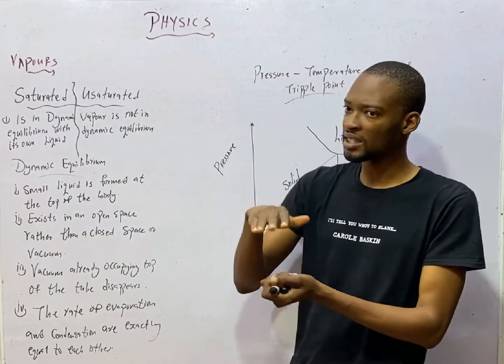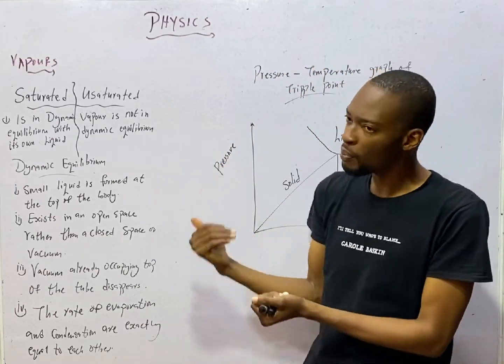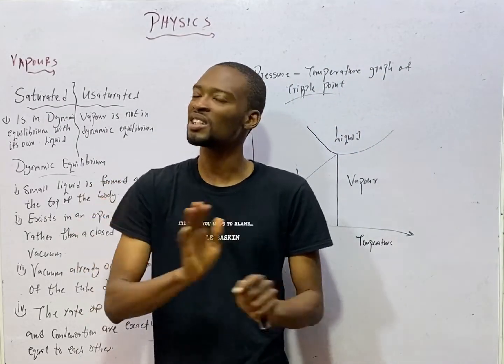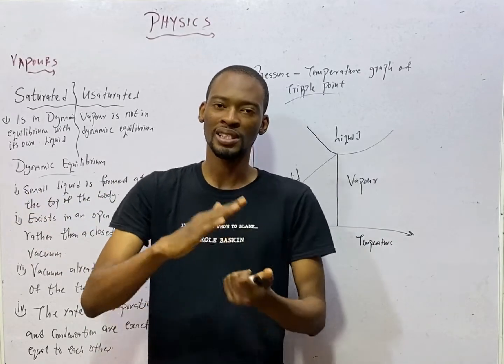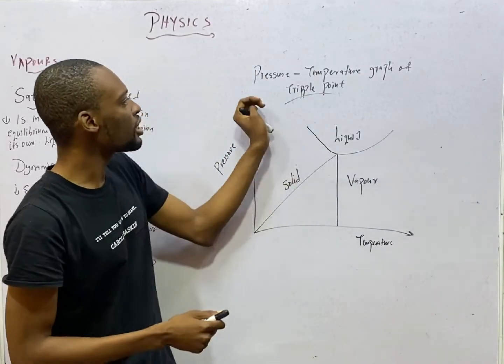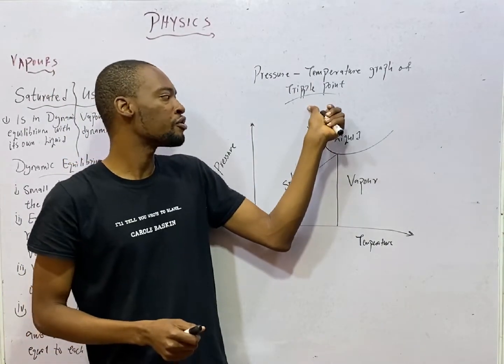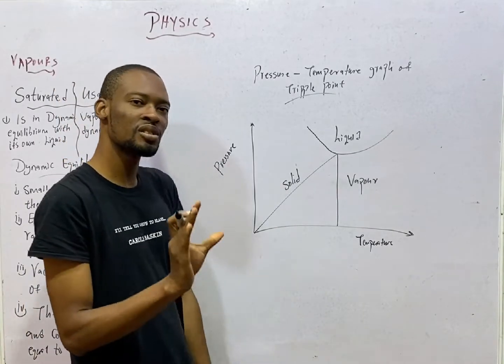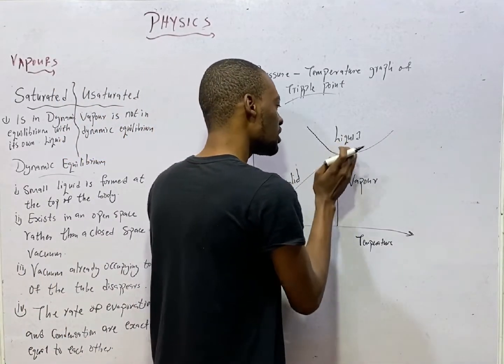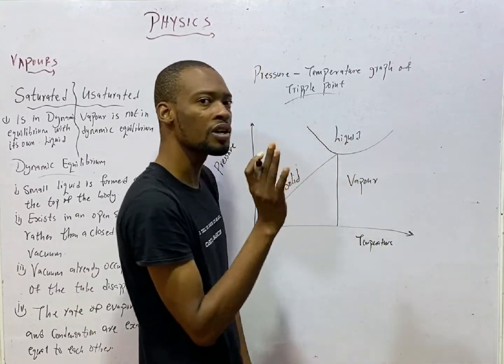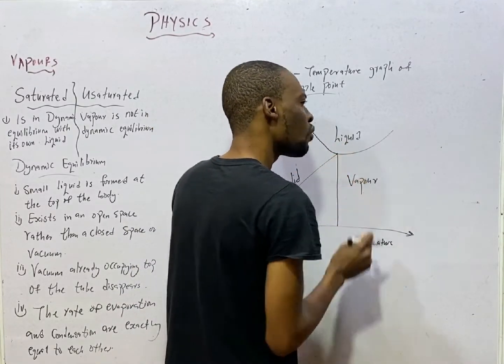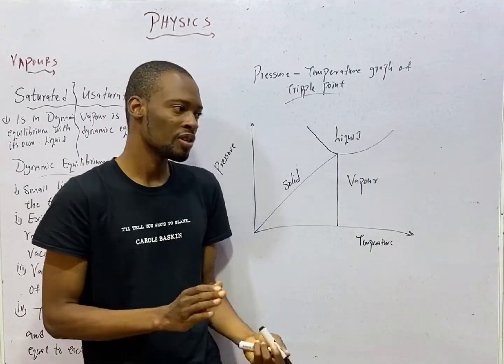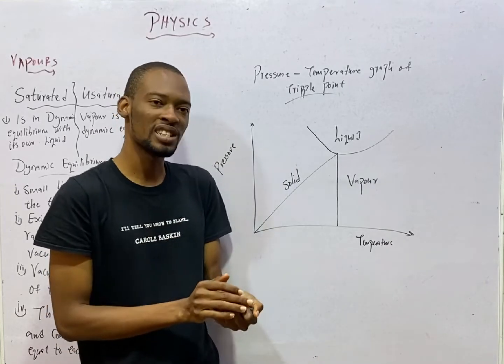At or above that temperature, a vapor cannot liquefy anymore. It can't change to liquid anymore so long that temperature is reached or exceeded. And this is the pressure temperature graph of triple point. For water, it is around 0.01 degrees Celsius or 273.16 Kelvin.